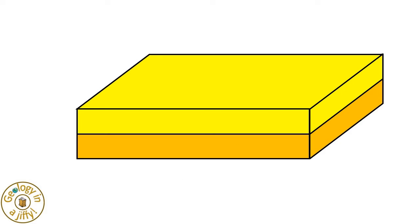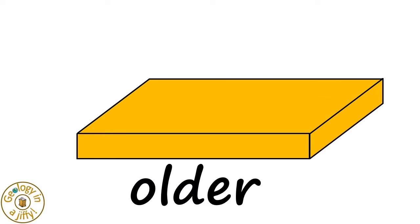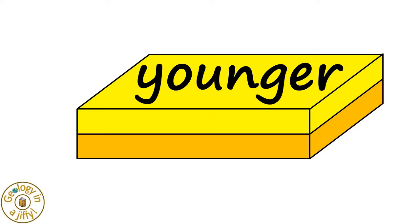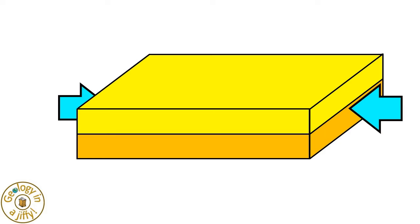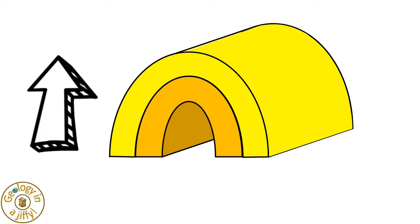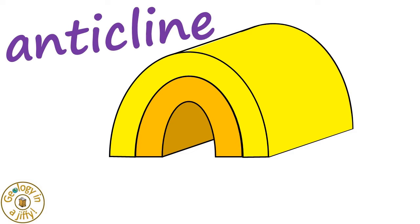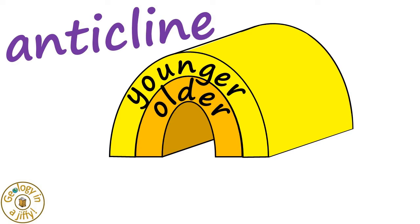If we take two layers of rock — a lower older layer overlain by a younger layer — and then squeeze and compress them, if the layers bend convexly upwards then an anticline forms, with the older layers in the core of the fold surrounded by the younger layers to the outside of the fold.